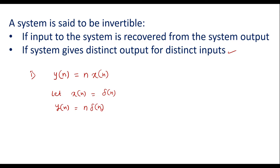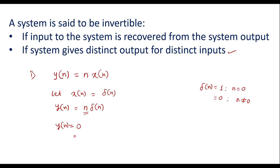We know that delta of n equals 1 for n equal to 0, and equals 0 when n is not equal to 0. So with respect to this definition, the value of delta of n will be 1 when n is equal to 0. But when n is 0, this term n will be 0. So 0 multiplied with the function gives y of n equal to 0 when x of n equals delta of n.